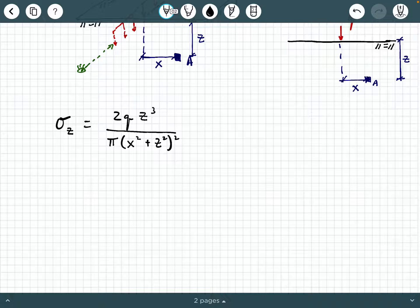They express this equation in a non-dimensional form, which is expressed like this. Sigma sub Z divided by Q over Z equals, and they have the two still here in the numerator, but they've factored some things out of the denominator leaving this equation.